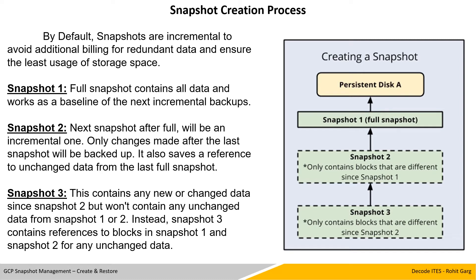That means it is purely incremental so that no redundant or duplicate data is backed up. Snapshot 3 contains any new or changed data since snapshot 2, but won't contain any unchanged data from snapshots 1 or 2. Instead, snapshot 3 contains references to blocks in snapshots 1 and 2 for unchanged data, and this chain continues. In snapshot 4, it checks for things unchanged after snapshot 3, takes backup of only changed data, and creates pointer references to snapshots 1, 2, and 3.